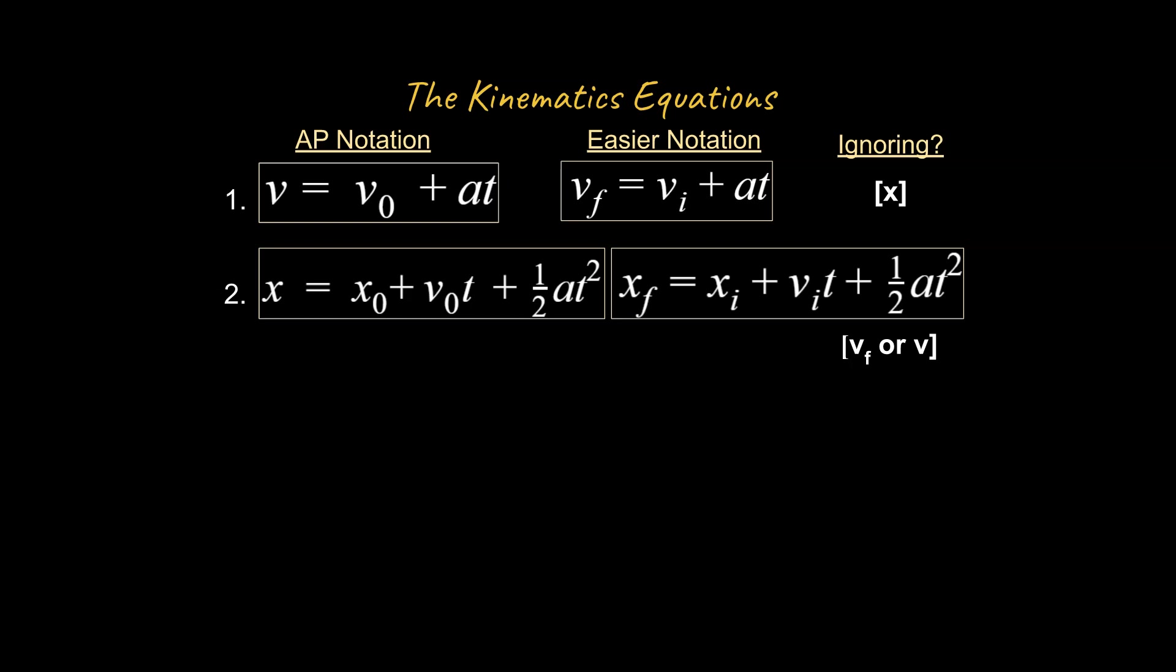So if you're given a problem, let's say you're going to solve for v initial. All right, so you're going to solve for v initial, and you're given your delta x, your x initial and your x final, and you're given your time, and you're given your acceleration, but there's no mention of your final velocity. You don't know how fast this thing is moving at the end of the problem. Then you can use this equation right here. Start with this equation, and you're going to be in good shape.